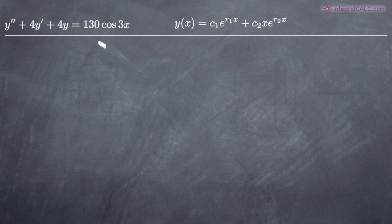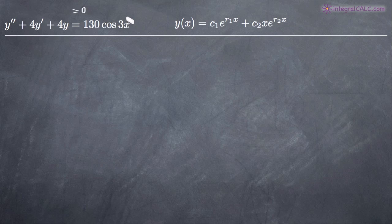Whenever you're dealing with second order differential equations, the thing you need to first know is that it's a homogeneous differential equation if the right-hand side is equal to zero. If it's anything other than zero, it's a non-homogeneous equation. So in our particular case, obviously, we're dealing with a non-homogeneous differential equation.